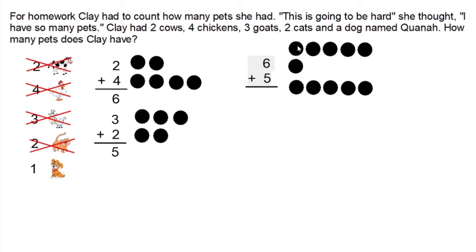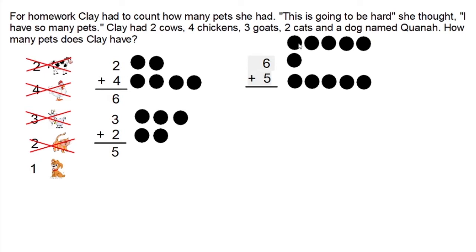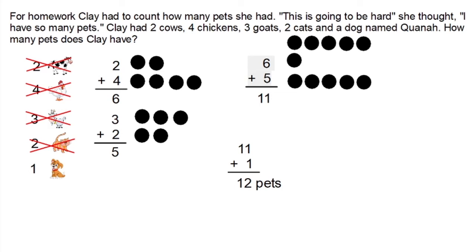Once again we're going to use our make a picture strategy, and we'll also use another strategy called counting on. Start with the six: seven, eight, nine, ten, eleven. But we're not done because we're so organized — we see that we did not include Quanah, and you can't leave Quanah out. So we need to take those eleven pets and add one to it. We don't need a strategy for that because one more than eleven is twelve, and we've accounted for Quanah. So Clay has twelve pets total.